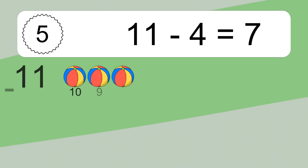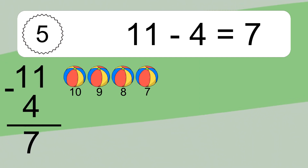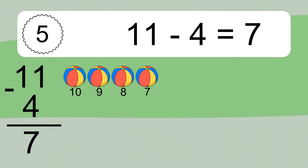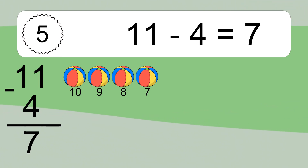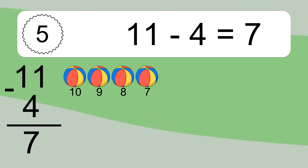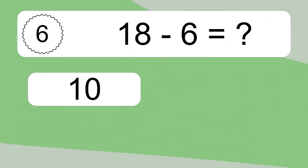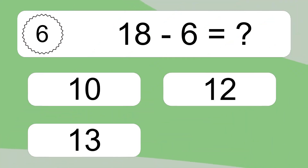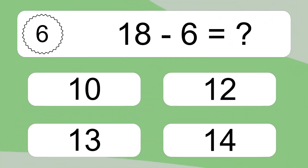11 minus 4 equals what? 11 minus 4 equals 7. Let's count it: 10, 9, 8, 7.